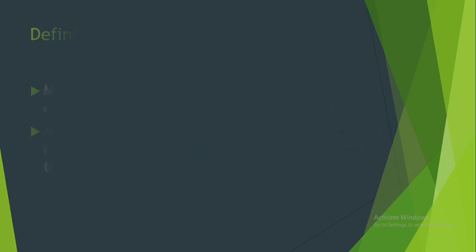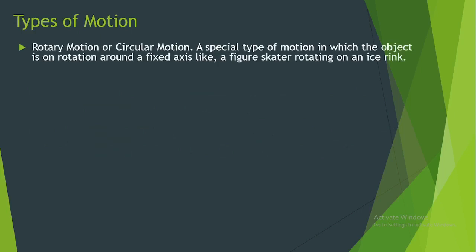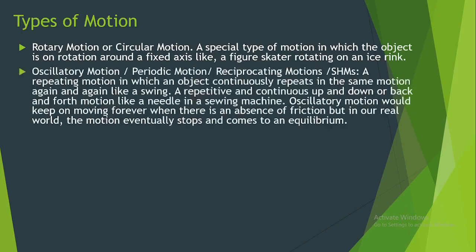There are general types of motion. We have rotary motion or circular motion — a special type of motion in which the object is on rotation around a fixed axis, like a figure skater rotating on an ice rink. Another kind of motion is oscillatory motion, sometimes called periodic motion or reciprocating motion, otherwise known as simple harmonic motion (SHM) — a repeating motion in which an object continuously repeats the same motion again and again, like a swing. Oscillatory motion would keep on moving forever in the absence of friction, but in our real world the motion eventually stops and comes to an equilibrium.